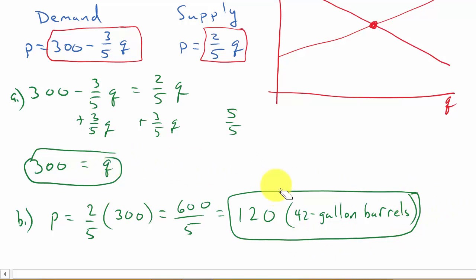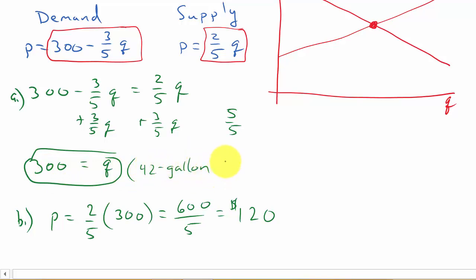Actually, I labeled the wrong one. That is 120 dollars. And Q, this is 300 42-gallon barrels. The equilibrium price is 120 dollars. The coordinates of this point would be (300, 120) if you wanted to plot it.